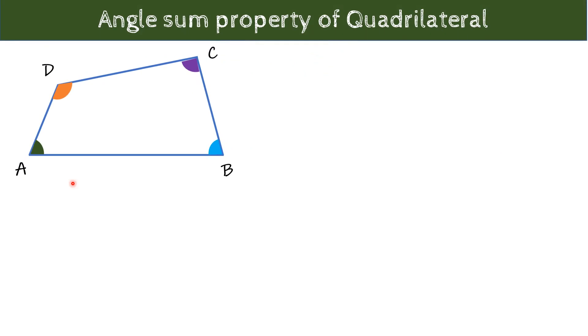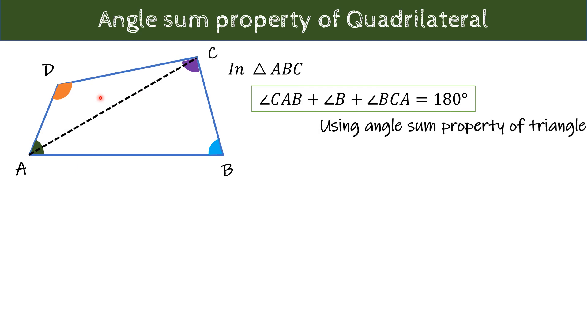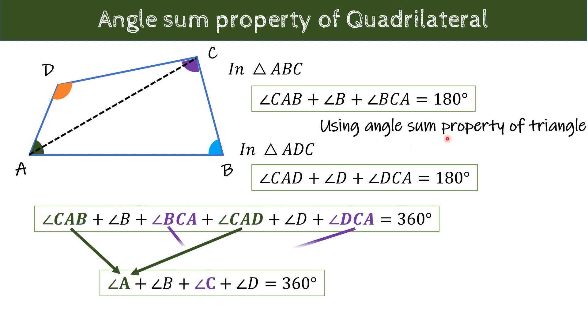अगर आपको याद होगा, previous lecture में हमने quadrilateral के interior angles को find out करने के लिए उसके दो vertices को join किया था, जिससे quadrilateral two different triangles में divide हो गया था and we have used the angle sum property of triangle to find sum of all these angles of the quadrilateral and it was 360 degrees.